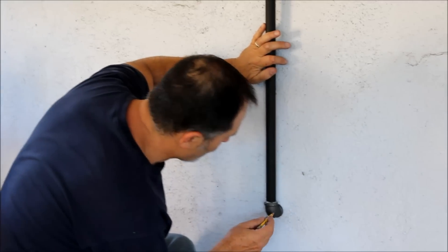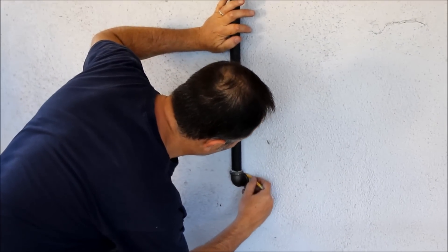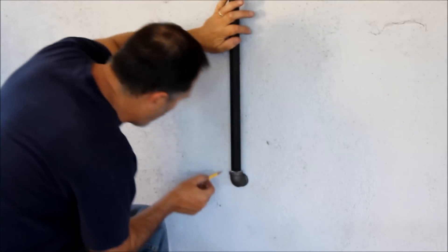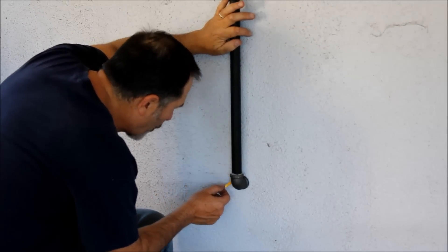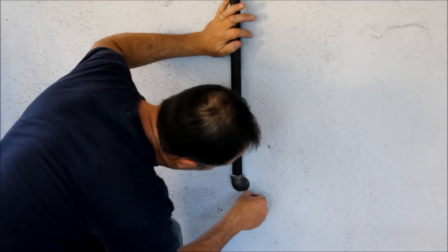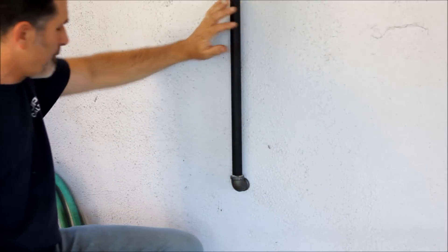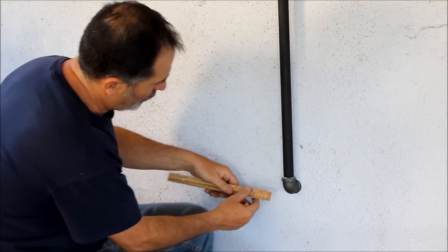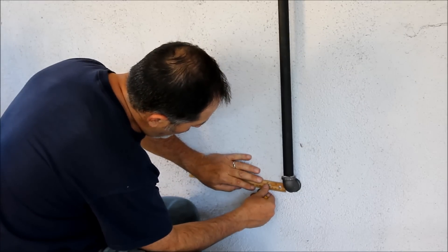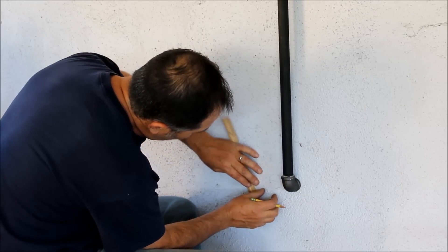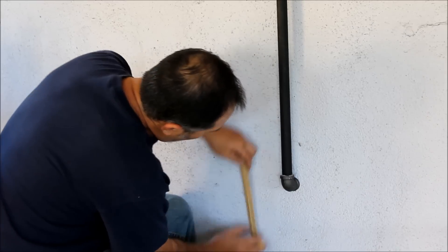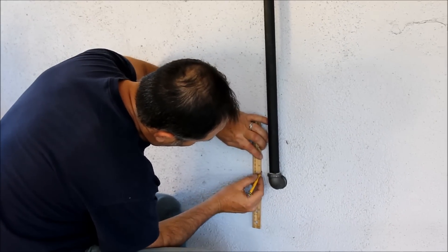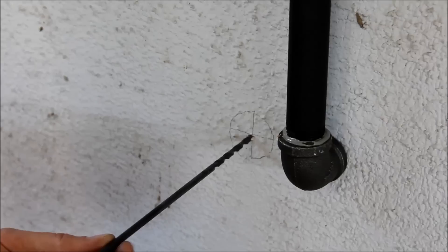I'm going to draw a circle around this here just to get centered on my pilot hole and for the hole through the wall. I got the circle drawn on there. Now, I'll just sort of work an X across here just to get the center of it for the hole saw and the pilot hole.